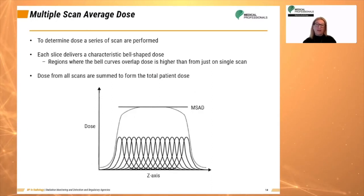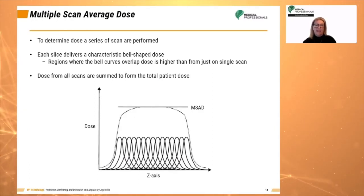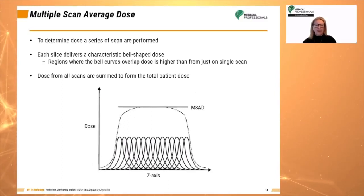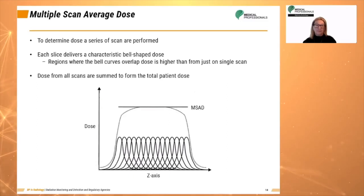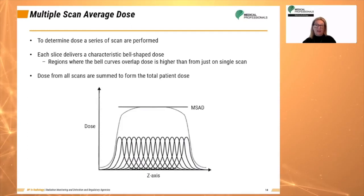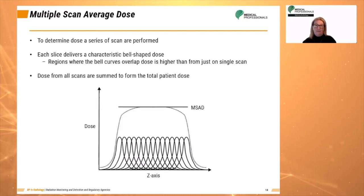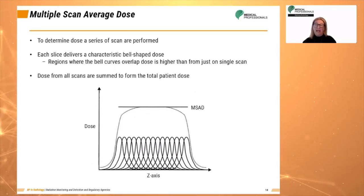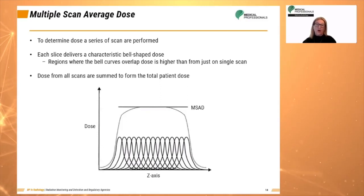One term to describe the accumulated dose is the multiple scan average dose, or MSAD, which is the dose from a multiple-scan examination averaged over one scan interval in the central portion of the multiple-scan dose profile. It represents the average dose received during an examination and is the first CT dose descriptor to be identified. To determine the average dose, a series of scans are performed, and between each scan, the patient is moved a bed index, or BI. The doses from all scans are then summed together to form the total patient dose.